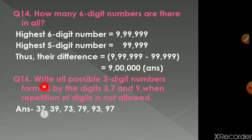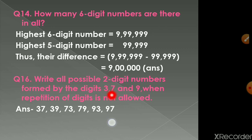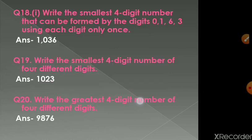Question number 16: write all possible two-digit numbers formed by the digits 3, 7, and 9 when repetition is not allowed. Keeping 3 in the tens place gives 37 and 39. Keeping 7 in the tens place gives 73 and 79. Keeping 9 in the tens place gives 93 and 97. We get six such two-digit numbers.